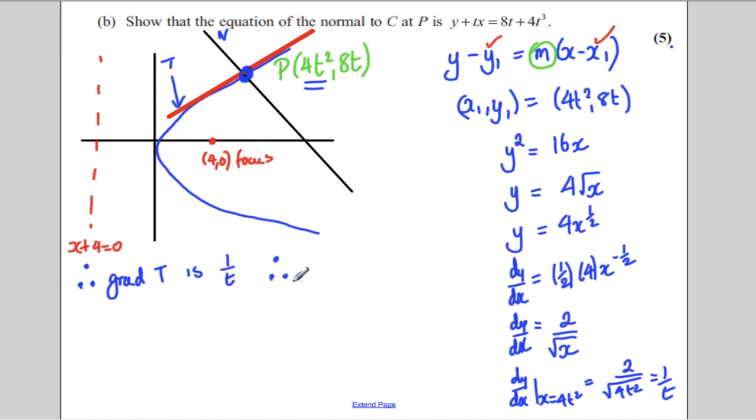And therefore, the gradient of the normal is its negative reciprocal, is negative t. So, now we've got everything we need to write this equation. We have now got our m as well. It is negative t. So, all we have to do is sub in.